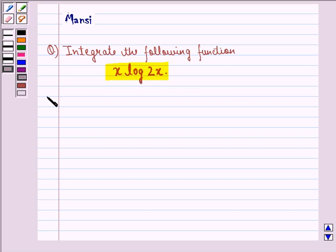Let us start with the solution to this question. We have to find integral x log 2x. Since we see that this is a product of two functions, we use integration by parts. Using by parts, log 2x will be the first function and x will be the second function.